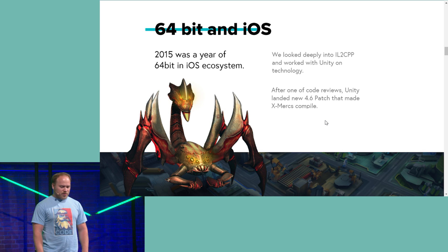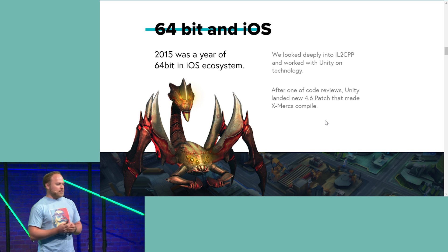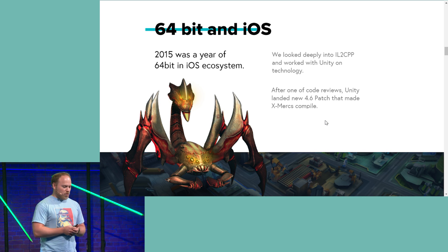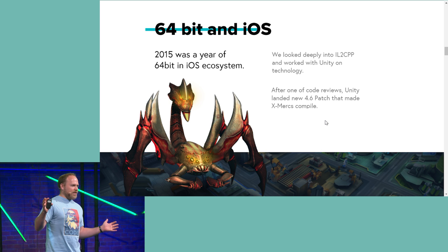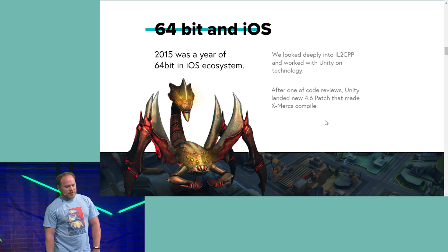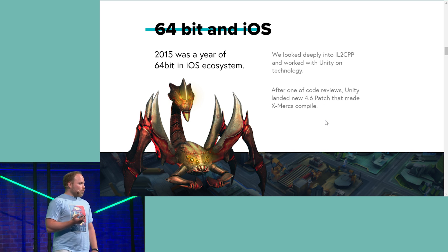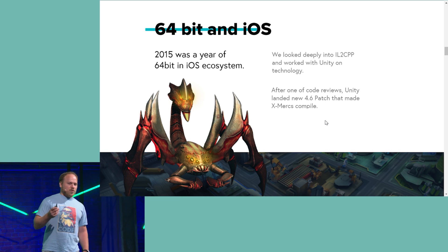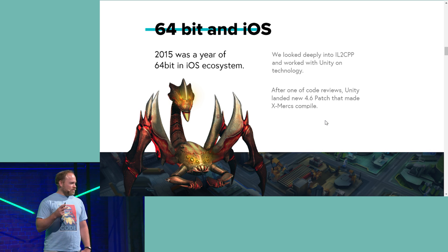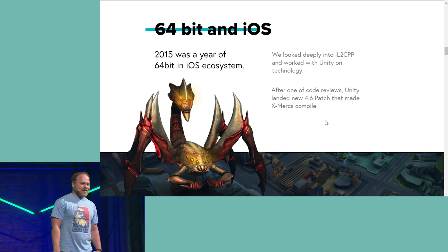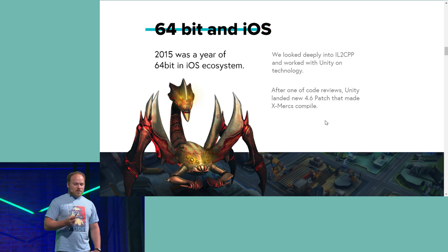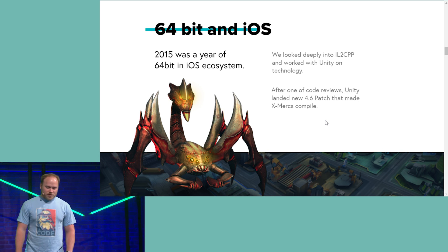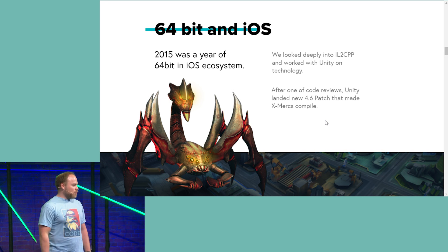We, like many others, looked into compiling the internal language to C++, and we were trying to make it work for our huge game — the size of the build right now is about 1 gig. Fortunately, we had enterprise support, and after one of the last reviews on Unity 4.6 we found a few bugs. In two days they fixed all these bugs, and finally we got a running build on 64-bit. The amount of time invested there was unpredictable, but it finally helped us move forward with 64-bit on iOS.